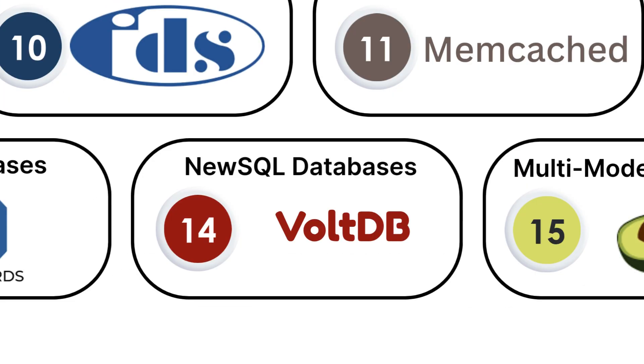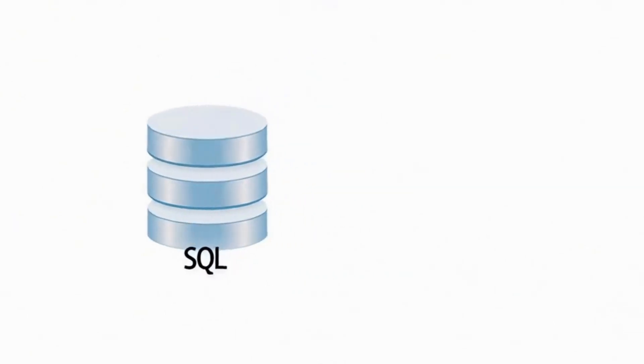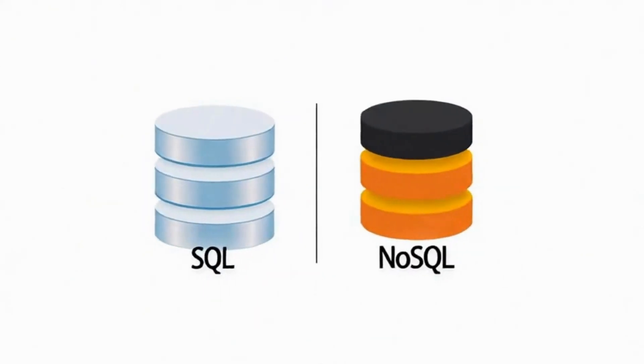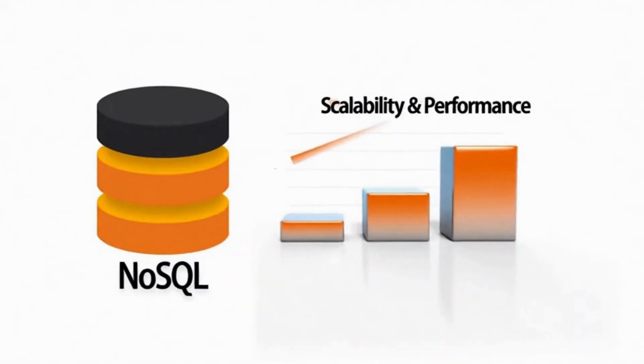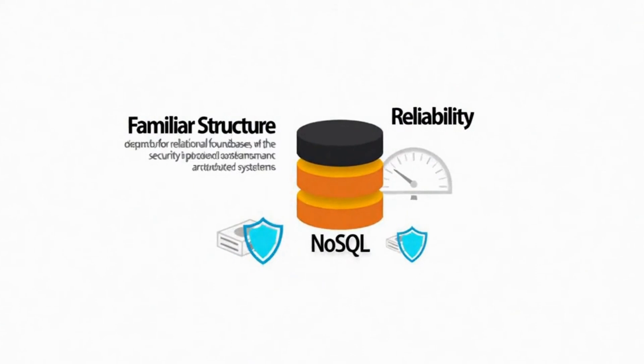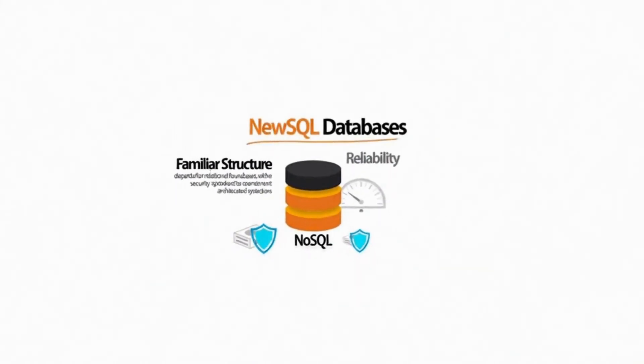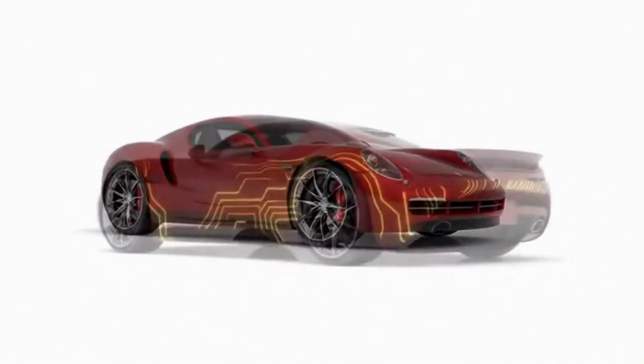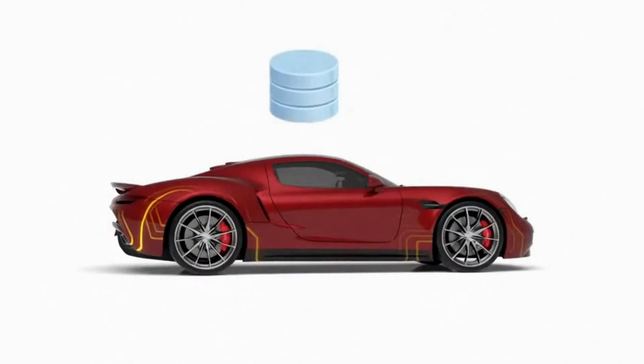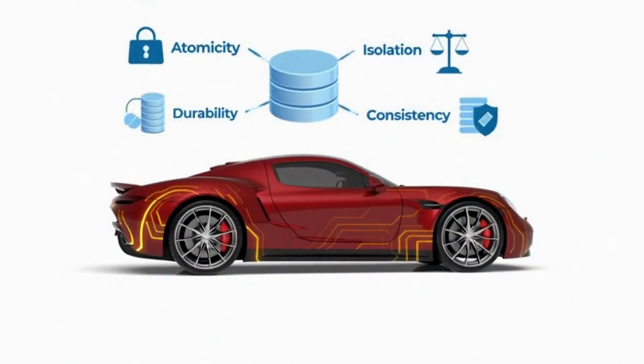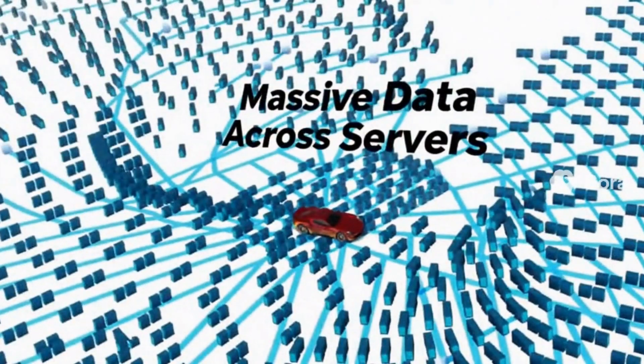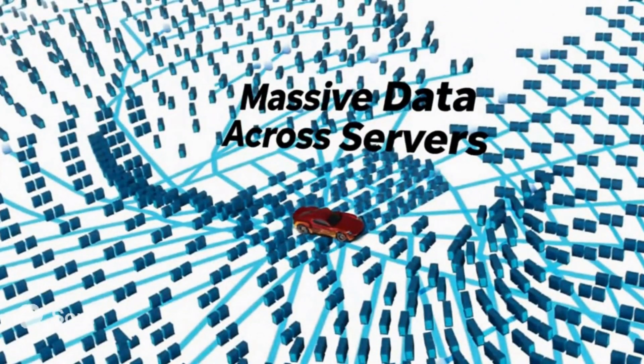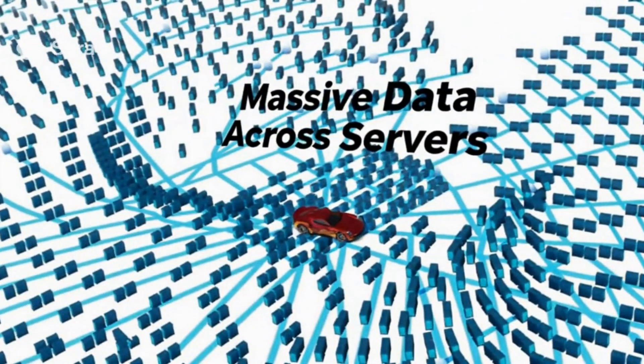Number fourteen, new SQL databases. New SQL databases try to give you the best of both worlds. The familiar structure and reliability of traditional SQL databases with the scalability and performance of NoSQL systems. Think of them as the latest sports car model that combines classic design with modern technology.